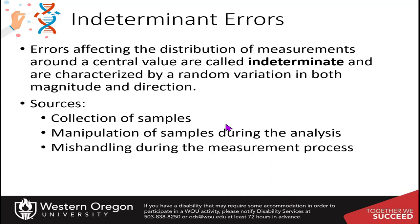This brings us to indeterminate errors — errors that affect the distribution of measurements around a central value, typically characterized by random variation in both magnitude and direction. Sources include collection of samples, manipulation during the analysis, and mishandling during measurement: spilling things, collecting haphazardly, not being careful — all leading to reduced precision.